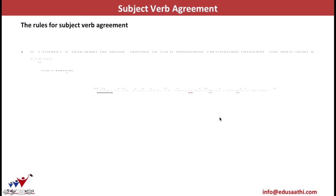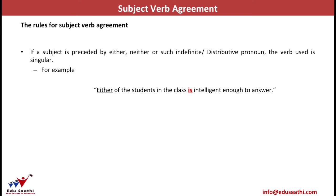Rule 4: if a subject is preceded by 'either,' 'neither,' or similar indefinite or distributive pronouns, the verb used is singular. In the sentence 'Either of the students in the class is intelligent,' although 'students' is plural, 'either' indicates choosing one at a time. Since we are choosing only one, the subject becomes singular and takes a singular verb.